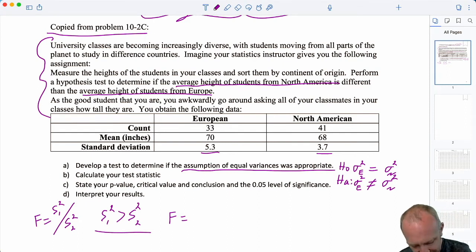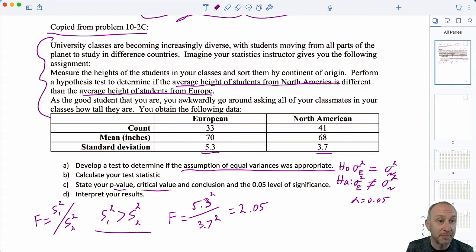Here's our test. Our test statistic is 5.3 squared over 3.7 squared. This is going to give me a test statistic of 2.05. Now we're going to do this test at the 0.05 level of significance and we'll do both critical value and p-value approach again just for practice. I always prefer the p-value approach. It gives us a little bit more information than just the critical value approach.